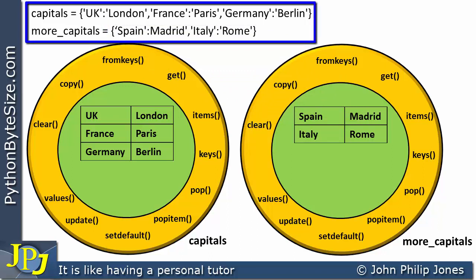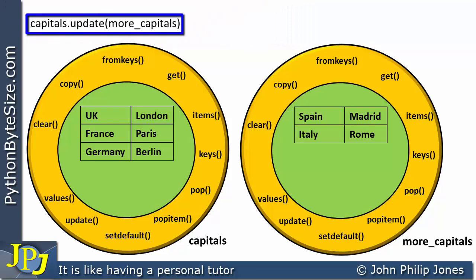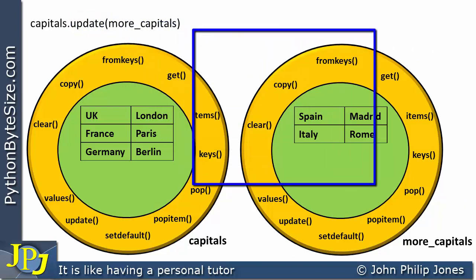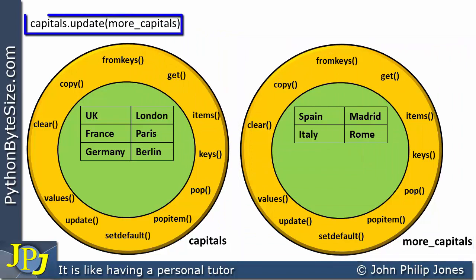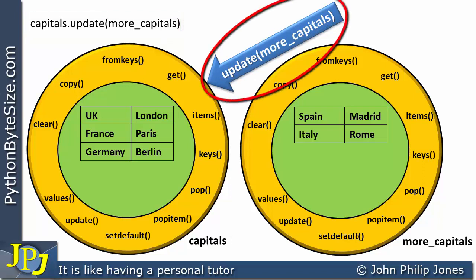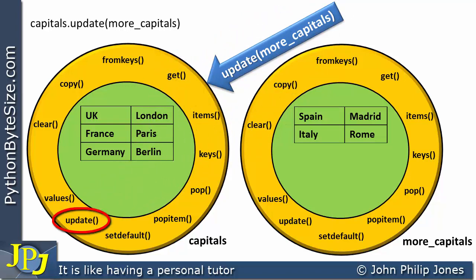After these two program statements have executed, the next statement to execute is the one appearing now. We can see this is a message to the first instance — shown in the diagram — and the method to be invoked is the update method. In brackets we're passing in the name of the second object, 'more_capitals'. We can show the effect of this message in the diagram: a message comes to the object, saying update with more_capitals in brackets, which invokes this particular method.